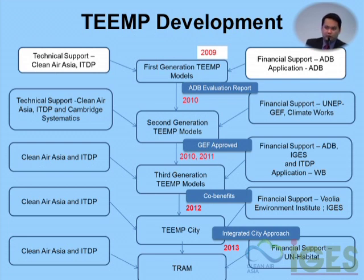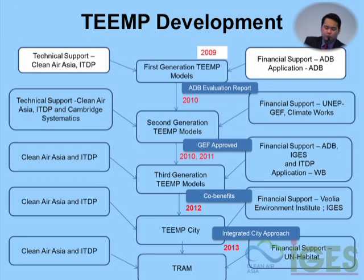During that time, around 78 to 80 percent of ADB's transport portfolio was on roadways — financing highways, urban roads, and rural roads. We did calculations for them, and I'll share some of the indicators we gathered from that engagement. There was an evaluation report produced, and we realized the calculations were not enough — we needed to add a user interface to the models.